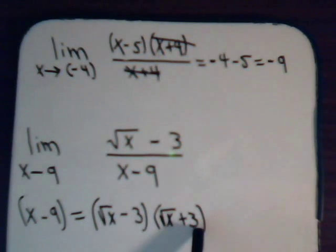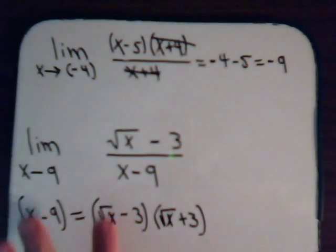Those cancel. And this gives us minus 9. So here, we're going to put this in place of x minus 9.